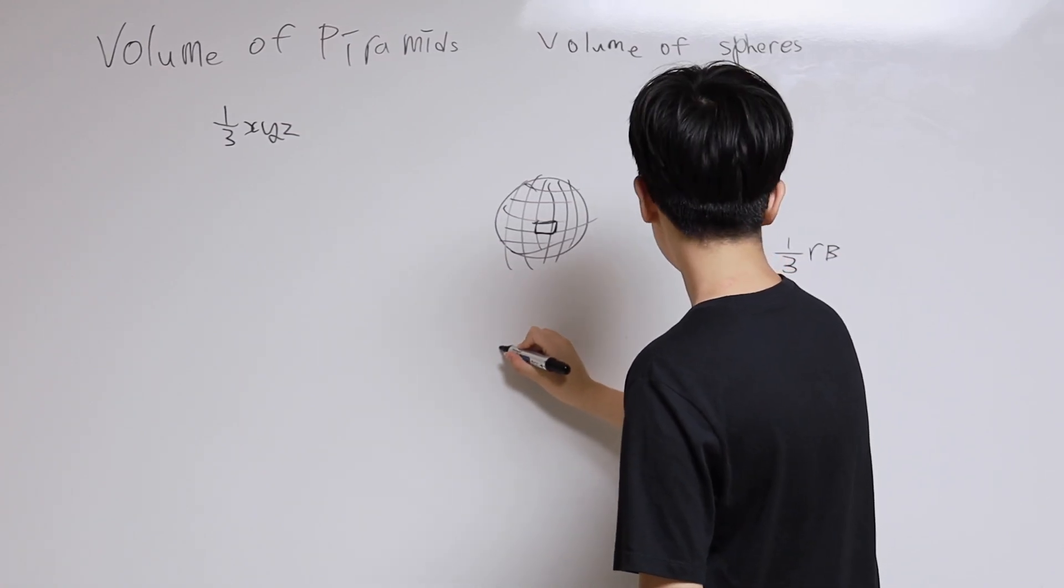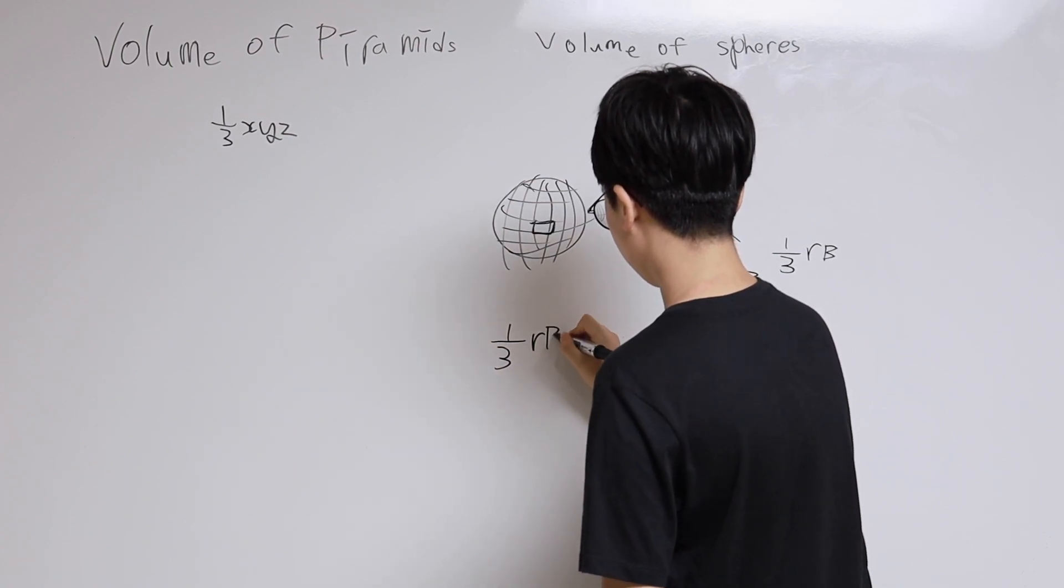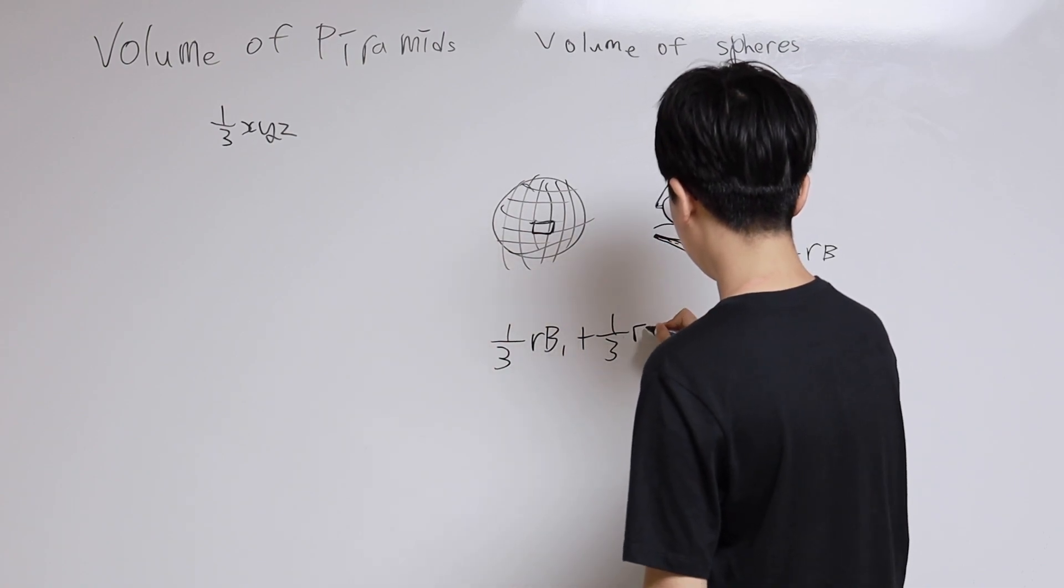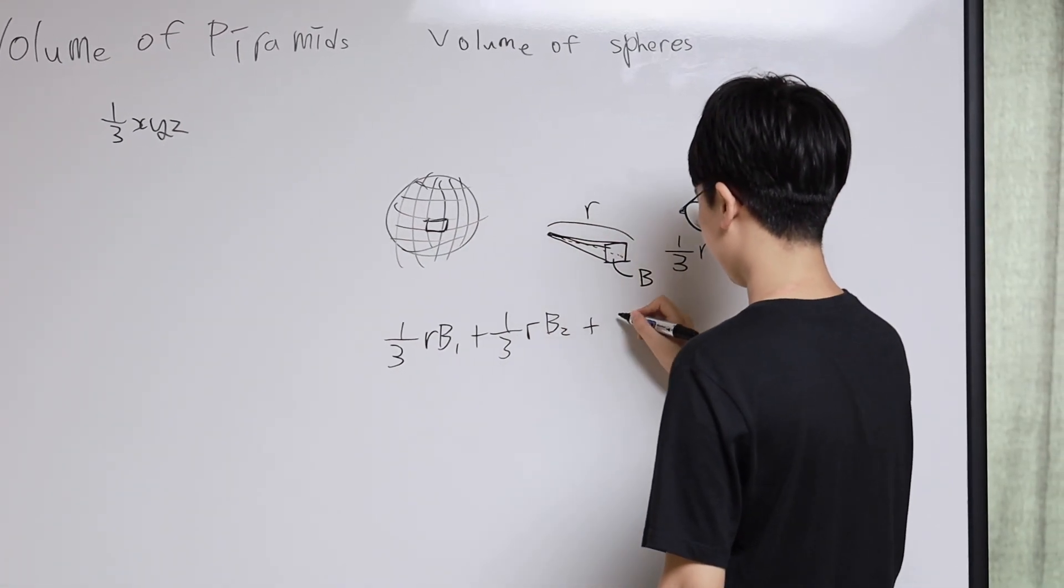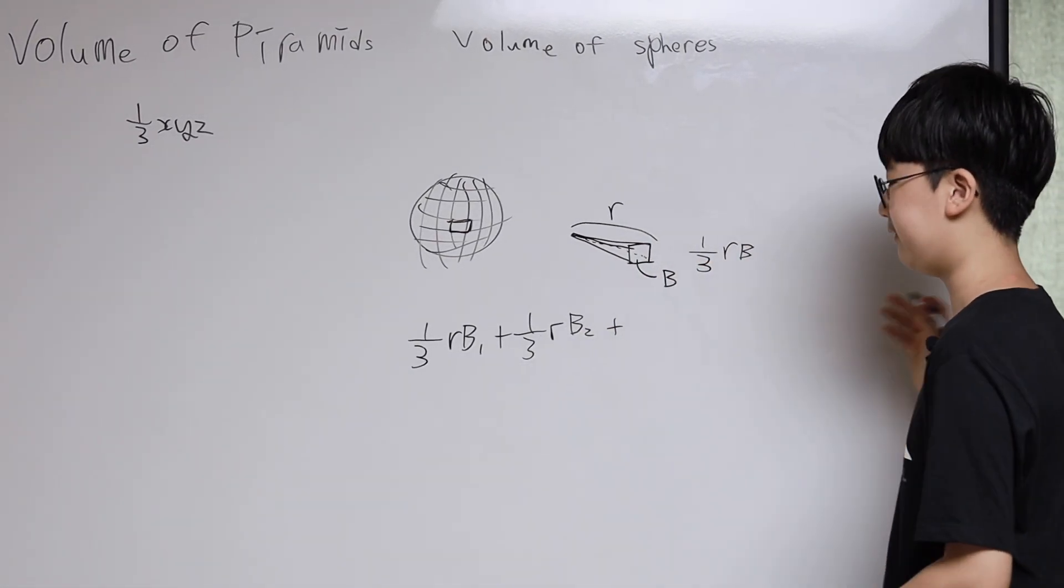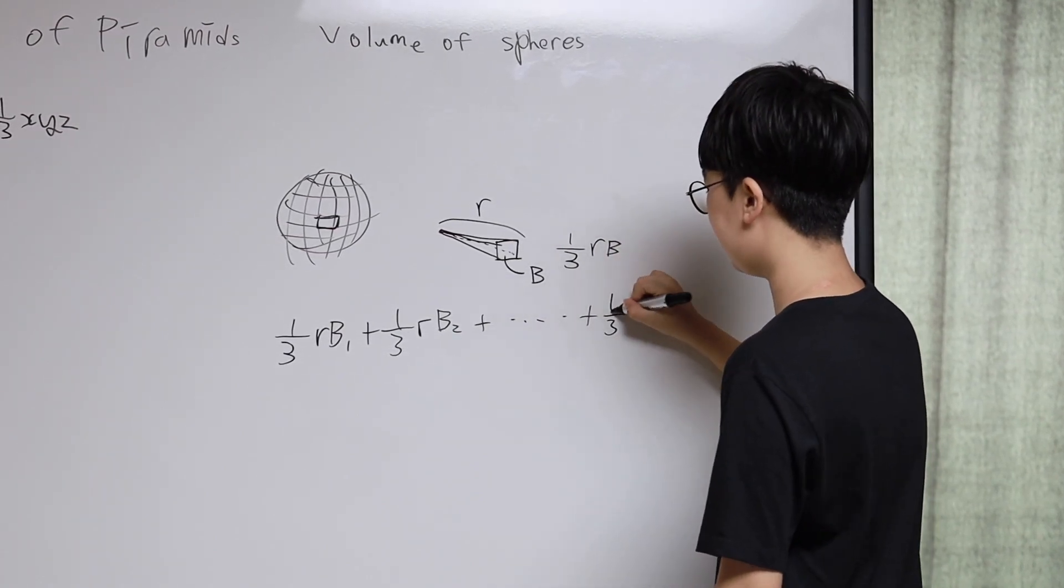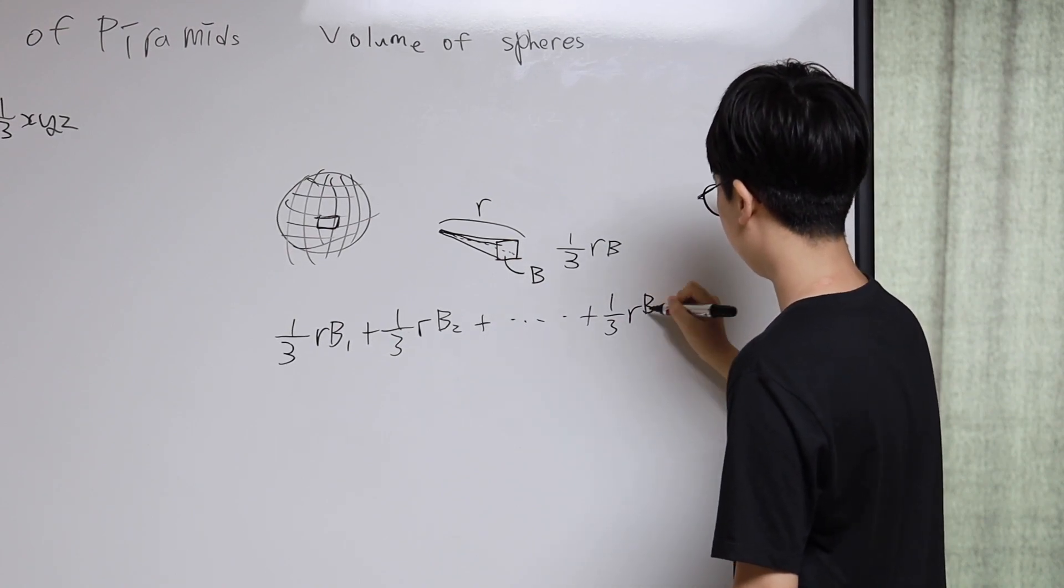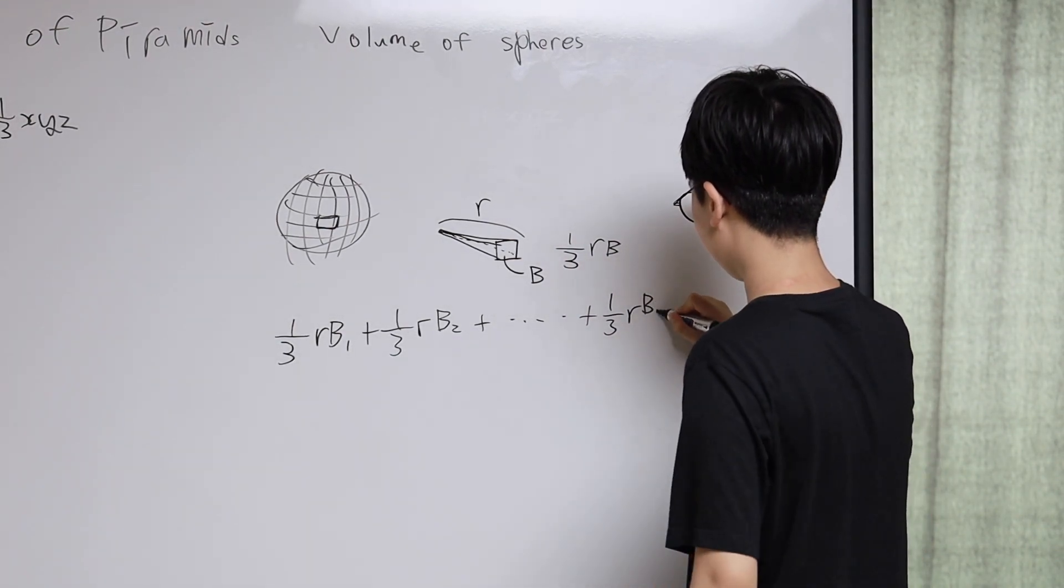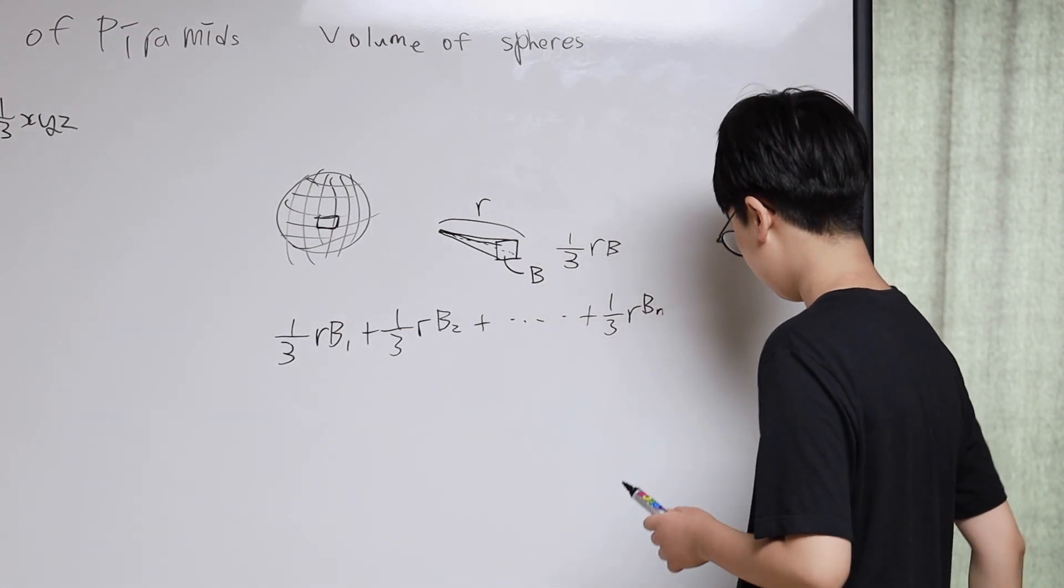The equation would be a third of R B1, plus a third of R B2, plus a third of R B3, plus a third of R B4, and so on, to the end of it, a third of R Bn.